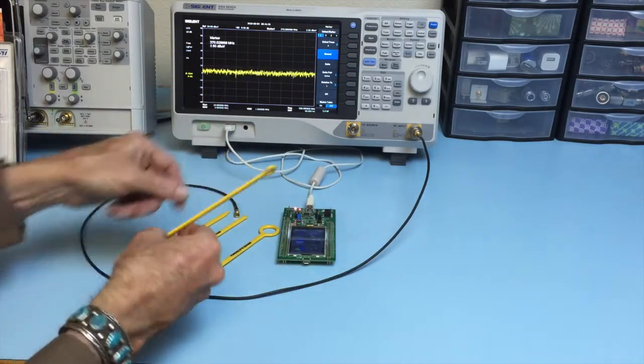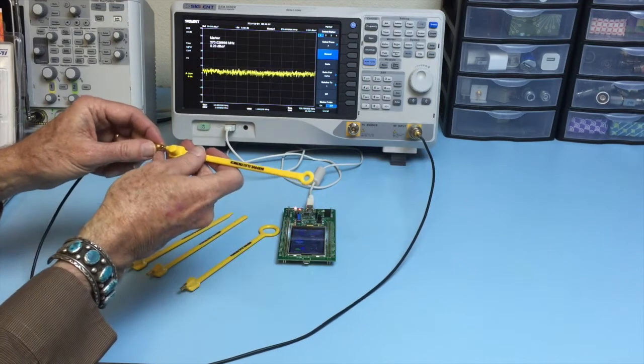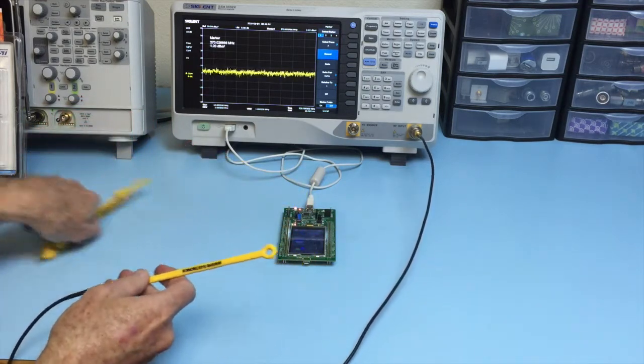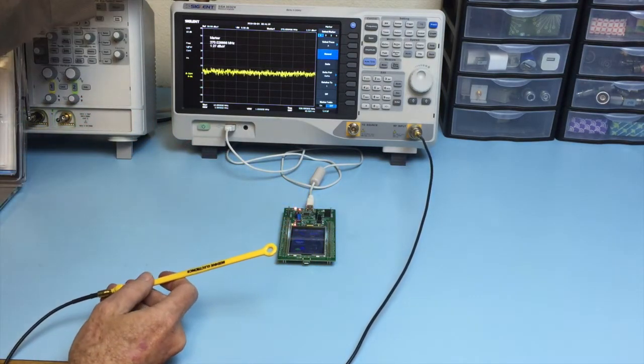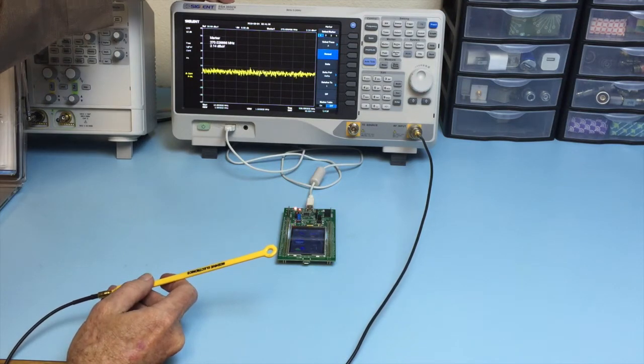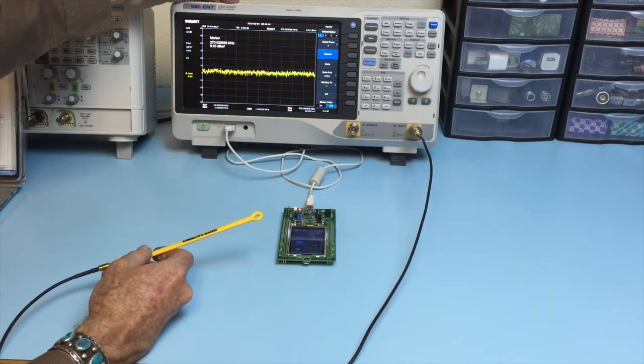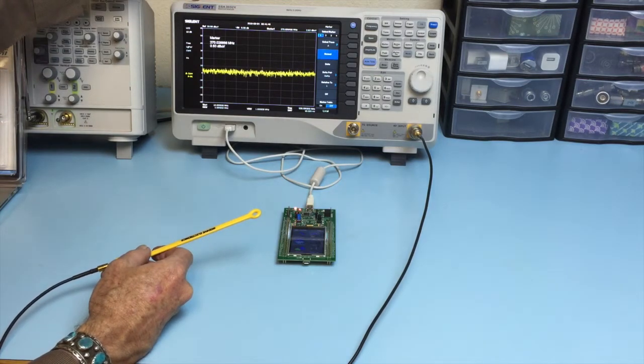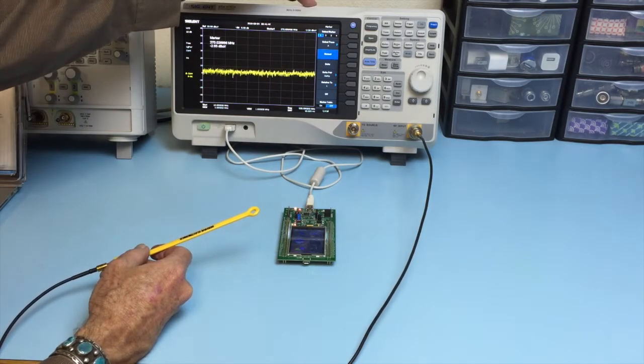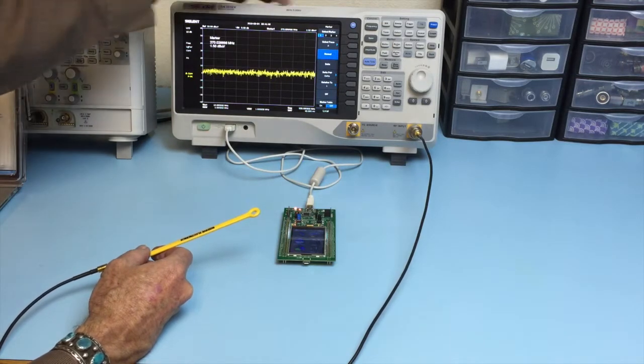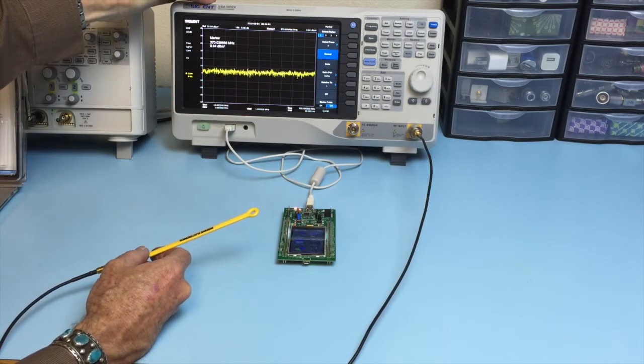I'll be using the middle size H-field probe, and we'll be using the SIGLENT SSA3032X Spectrum Analyzer for our evaluation. I'm looking from 10 MHz to 500 MHz, which is a very common range for troubleshooting.